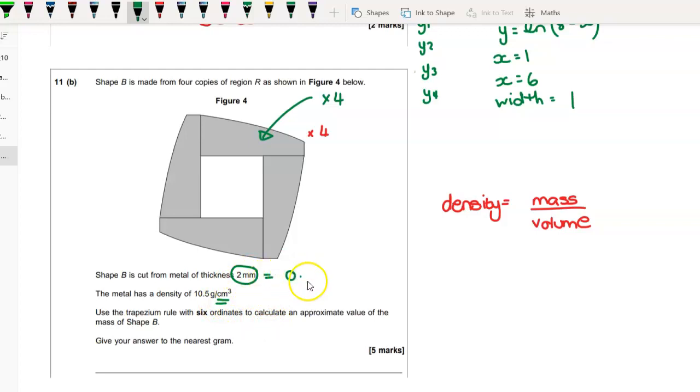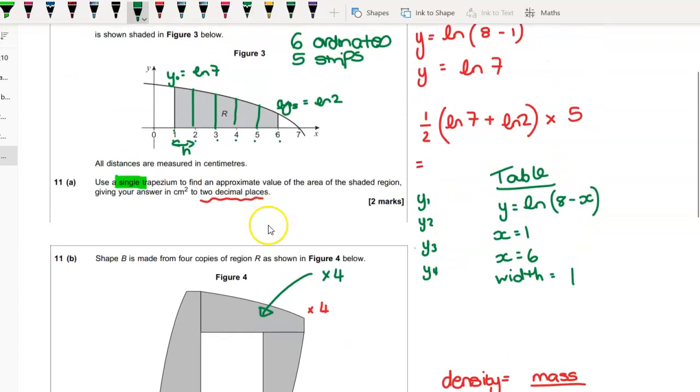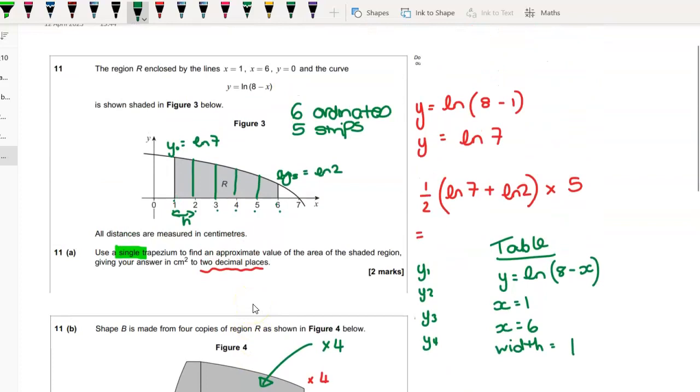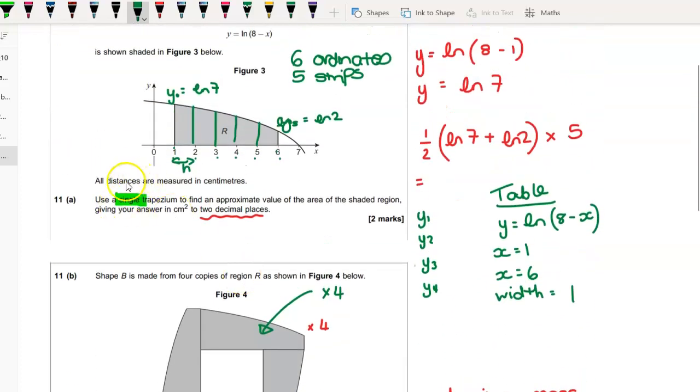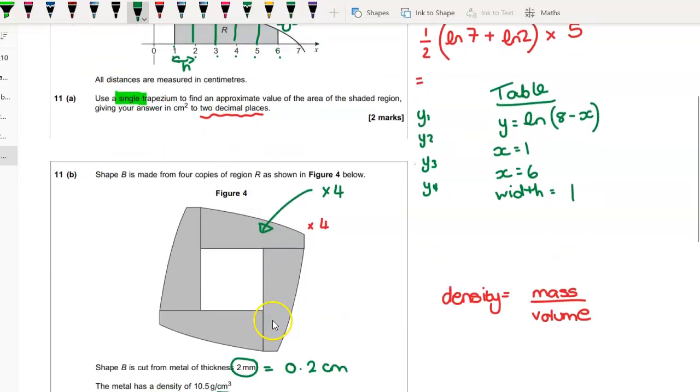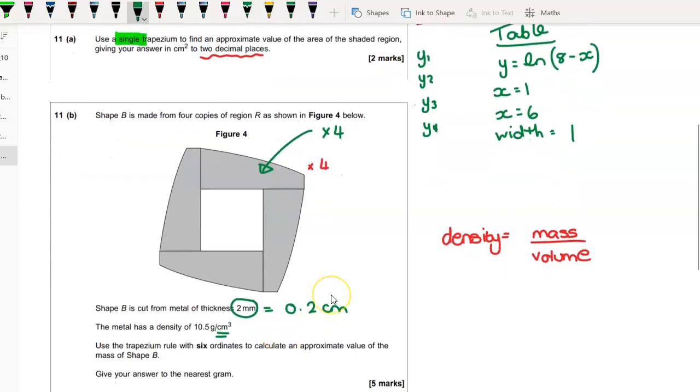Because if we look at our density, our density is in centimeters cubed. So there's ten millimeters in a centimeter, which means two millimeters is 0.2 centimeters. So you're going to times your area that you get by 0.2.